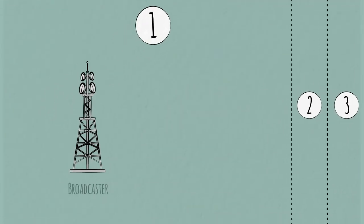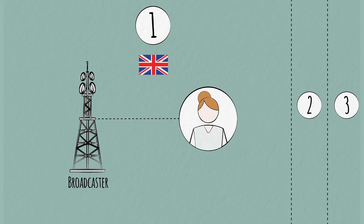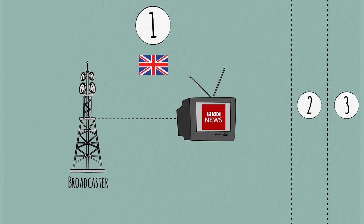Model 1. Broadcasters reach consumers with no intermediary. For example, in the UK, you just need a TV and aerial to watch BBC channels.